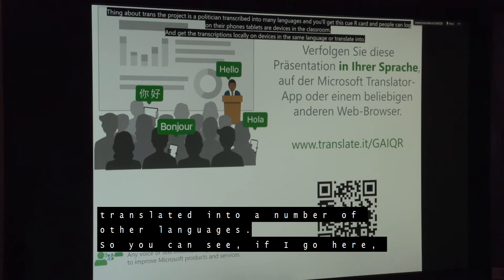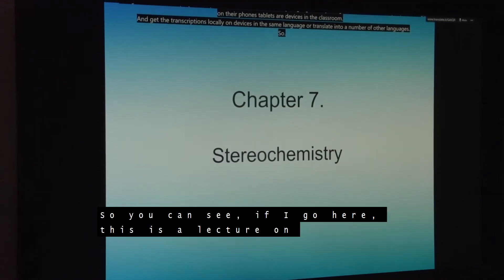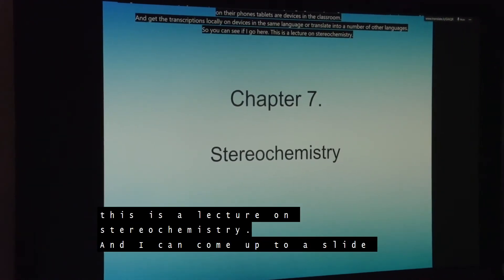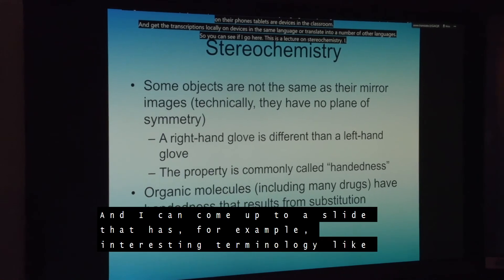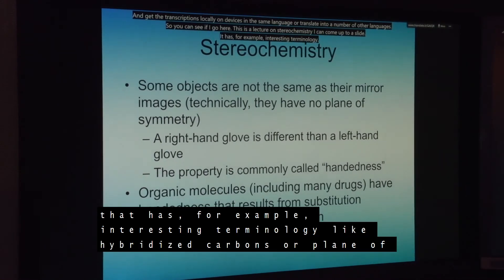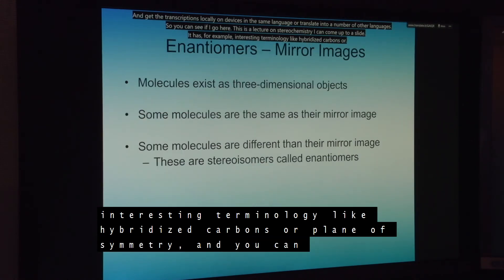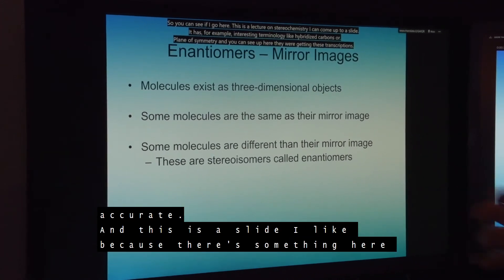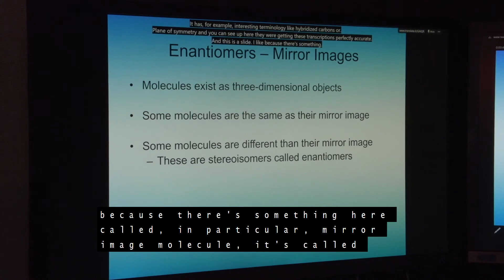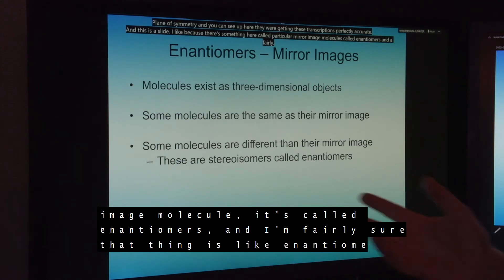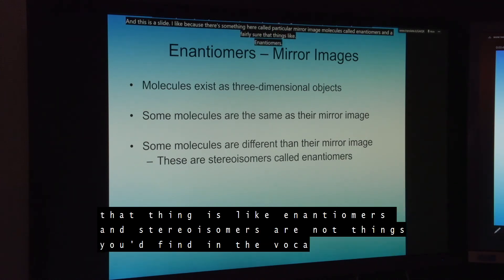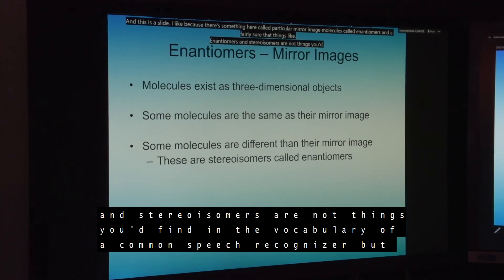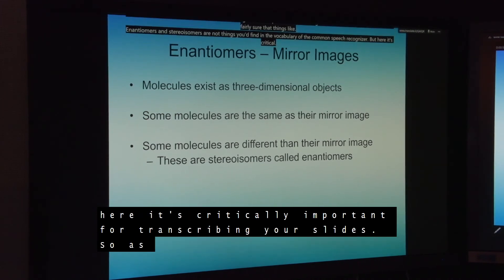You can get the transcriptions locally on devices in the same language or translated into a number of other languages. This is a lecture on stereochemistry. I can come up to a slide that has interesting terminology like hybridized carbons or plane of symmetry, and you can see that we're getting these transcriptions perfectly accurate. This is a slide I like because there's something called mirror image molecules called enantiomers. Things like enantiomers and stereoisomers are not things you'd find in the vocabulary of a common speech recognizer, but here it's critically important for transcribing your slides.